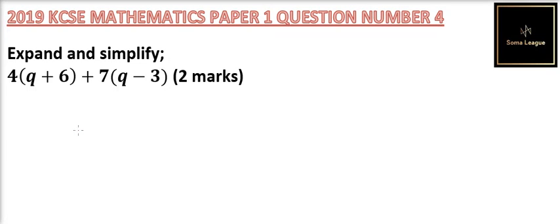Question number 4. Expand and simplify. 4 into bracket Q plus 6, close the bracket, plus 7 into bracket Q minus 3, close the bracket. You get 2 marks.